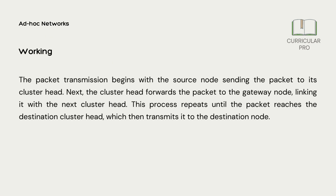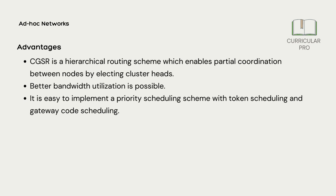Working: the packet transmission begins with the source node sending the packet to its cluster head. Next, the cluster head forwards the packet to the gateway node, linking it with the next cluster head. This process repeats until the packet reaches the destination cluster head, which then transmits it to the destination node.